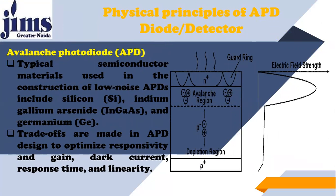Looking at the picture again — this is the avalanche region, which has a high electric field. Typical semiconductor materials used in the construction of low-noise APDs include silicon, indium gallium arsenide, and germanium. There are trade-offs made in APD design to optimize responsivity and gain, dark current, response time, and linearity.